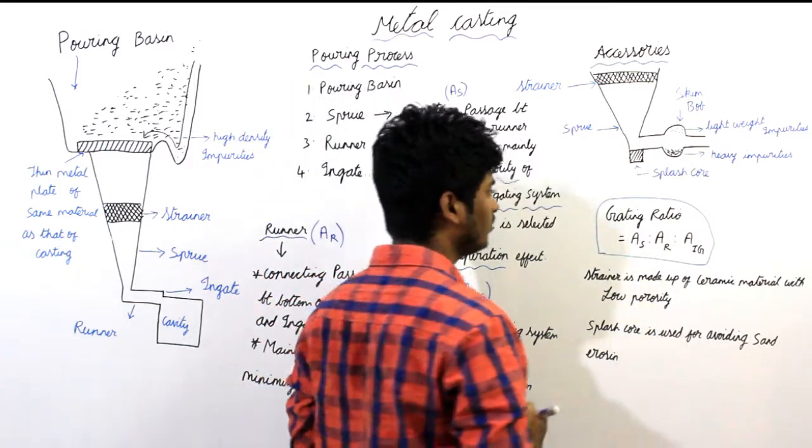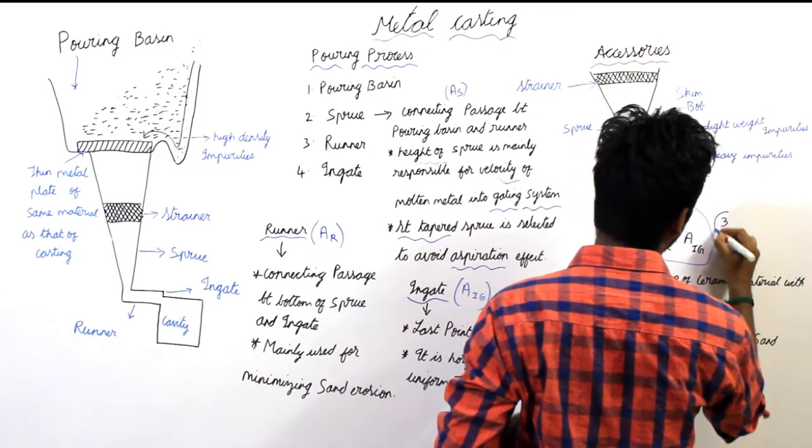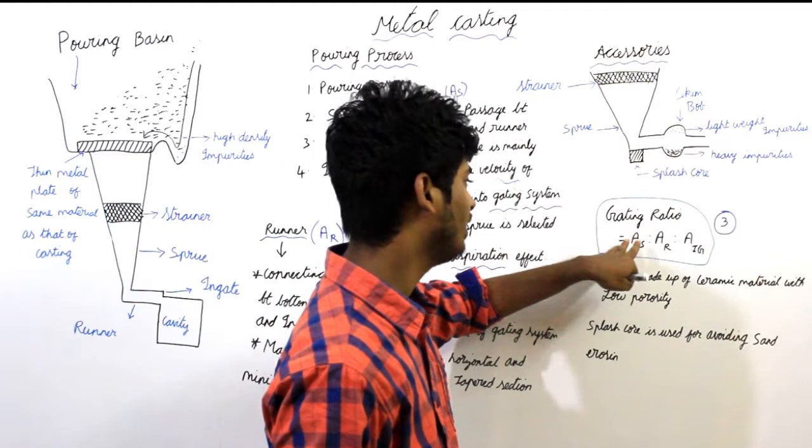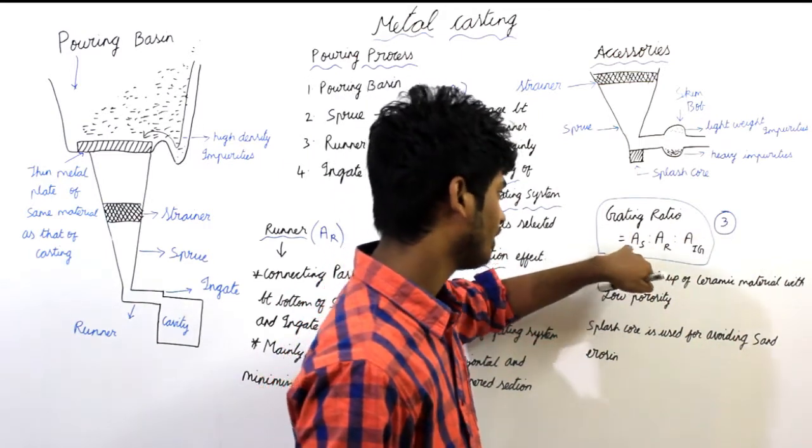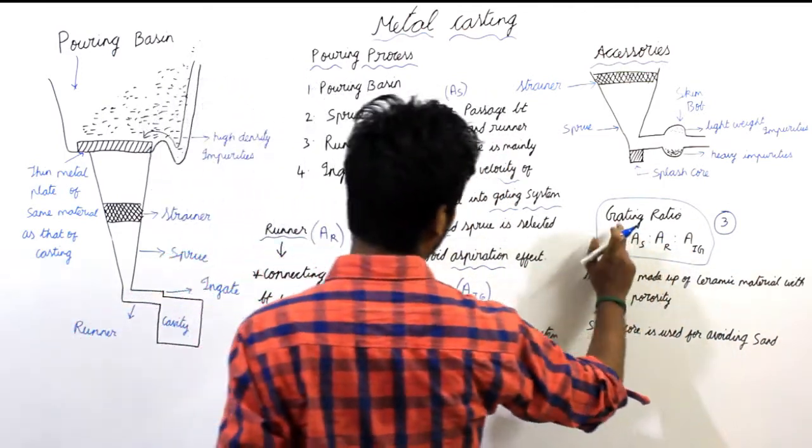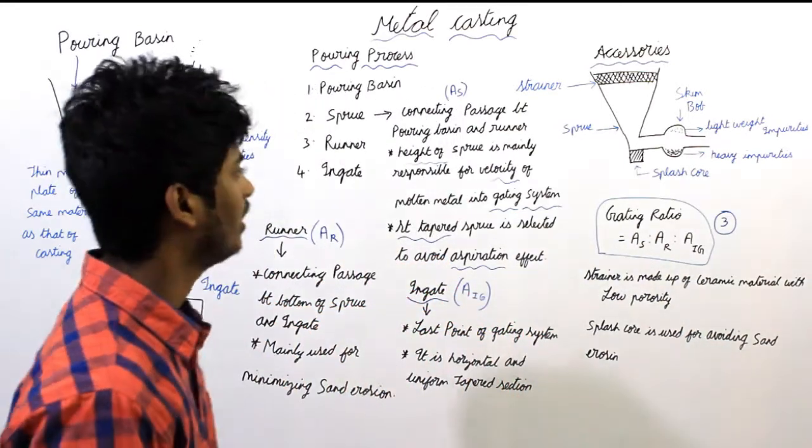And for gating system, this gating ratio is very much important. It is termed as formula number 3. Please always remember this gating ratio in same order. SRI - sprue, runner and ingate. This is important for solving problems in gating system. Thank you.